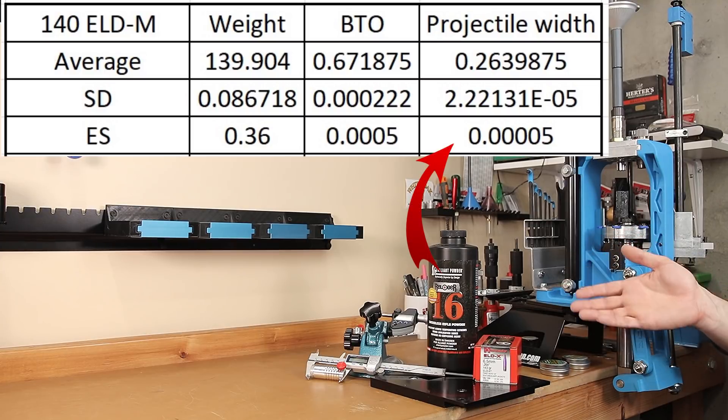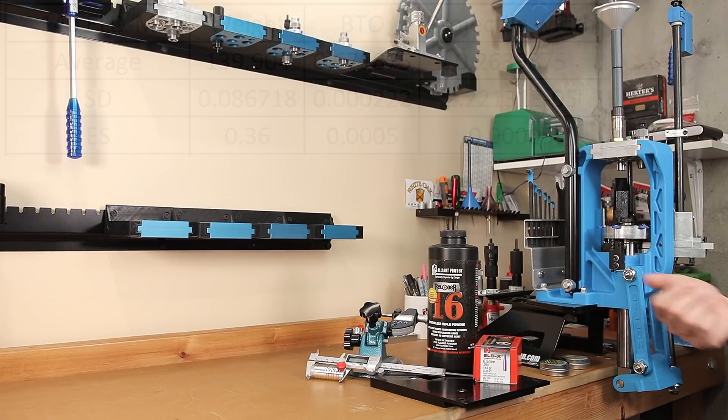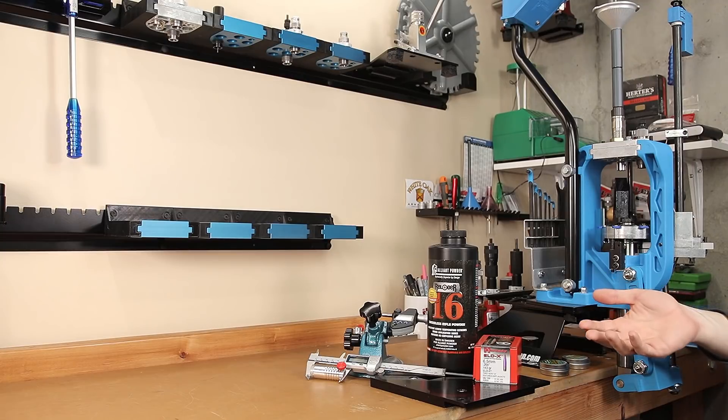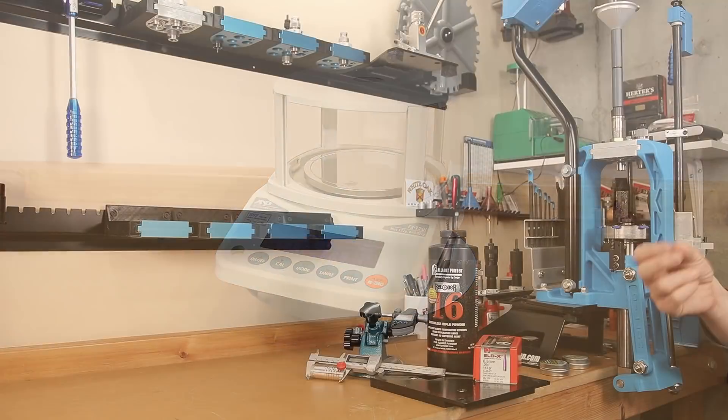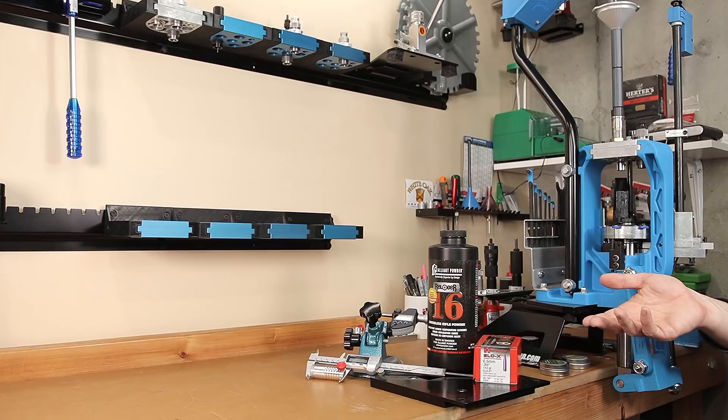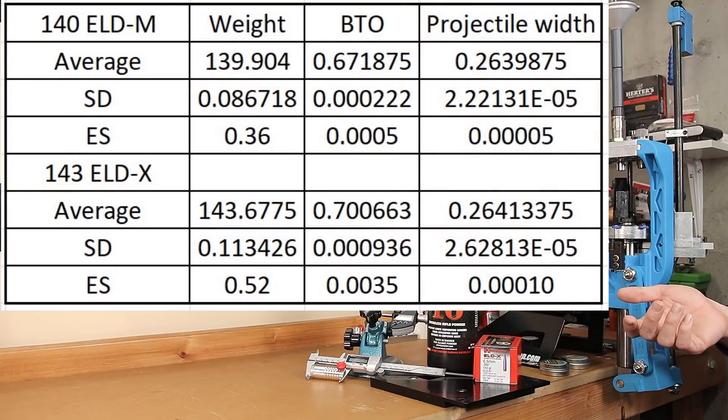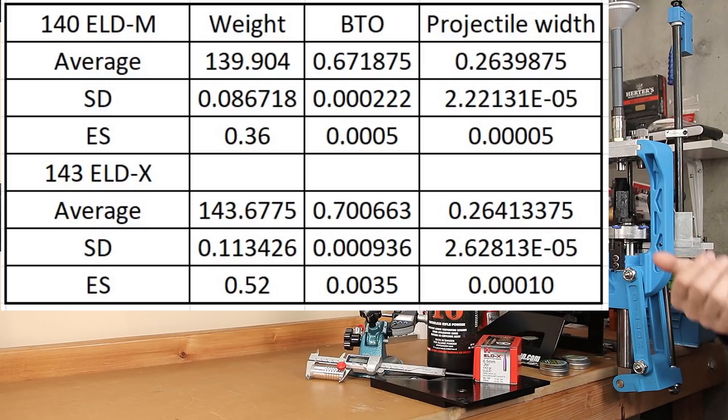Basically, they're as tight as this tool can measure inside its own accuracy range, but that's still, in my opinion, pretty impressive. For those of you that are wondering about the weights and how they were measured, they were measured on my FX120i. This can resolve down to 0.02 grains. The average weight on the 143 grain ELDX's was 143.67, average base to ogive was 0.7, and the projectile width was slightly larger on average than the 140 grain ELDM's. It's really hard to resolve that small of a value in your measurement, so take that data with a grain of salt. It's as good as I can measure. What's more interesting when we look at the standard deviation extreme spread on those, the weight really isn't what I find is interesting. There is a slightly larger extreme spread on the weights for the 143 grain ELDX's.